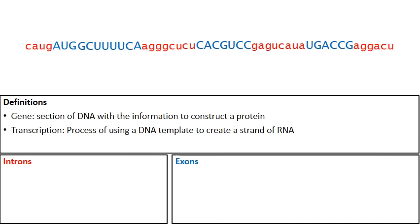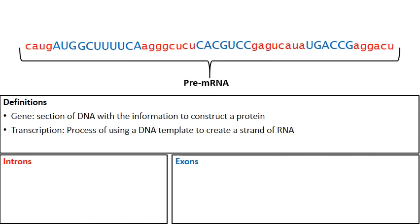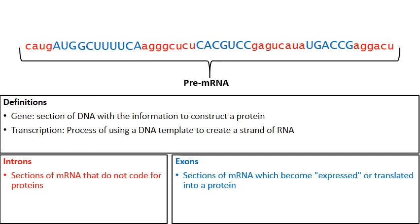Now we're going to focus our attention on the RNA that's been created. That's not final messenger RNA — this is what is called pre-mRNA. Because of the red introns and the blue exons, we have to process this pre-mRNA before it becomes final mRNA. Introns are sections of RNA that do not code for a protein. Therefore, exons are the sections of RNA which will code for a protein — these are sections of RNA that will become expressed and translated into a protein.